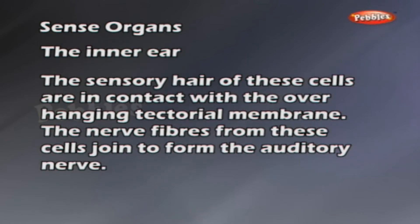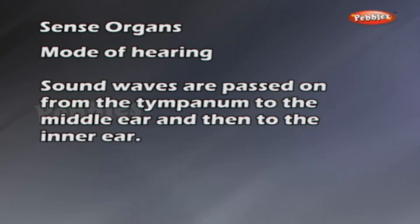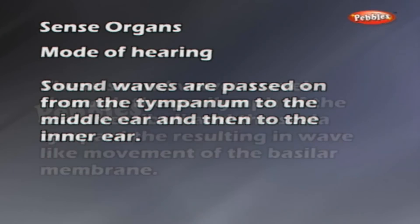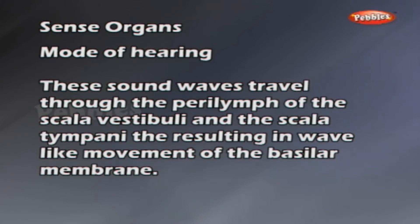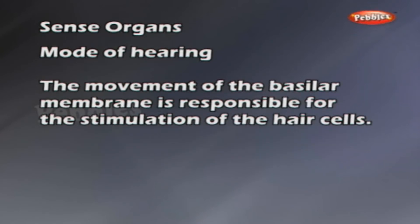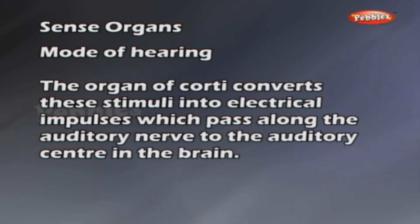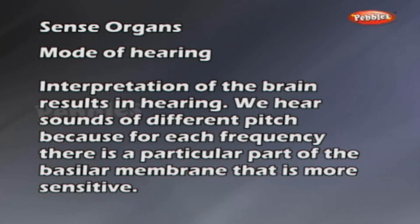Mode of Hearing. Sound waves are passed on from the tympanum to the middle ear and then to the inner ear. These sound waves travel through the perilymph of the scala vestibuli and the scala tympani, resulting in wave-like movement of the basilar membrane. The movement of the basilar membrane is responsible for the stimulation of the hair cells. The organ of Corti converts these stimuli into electrical impulses, which pass along the auditory nerve to the auditory center in the brain. Interpretation by the brain results in hearing. We hear sounds of different pitch because for each frequency, there is a particular part of the basilar membrane that is more sensitive.